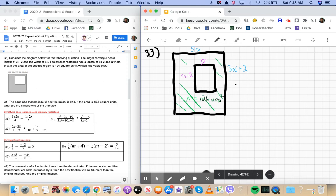So the whole rectangle, the whole outside, is going to be 5x times 3x plus 2, right?